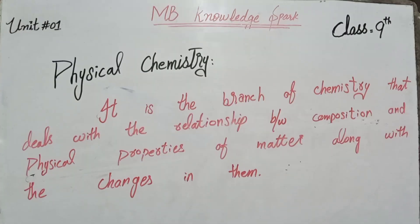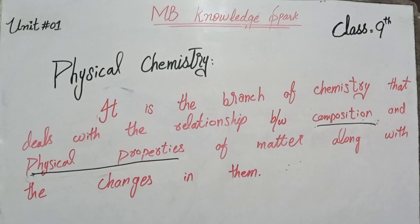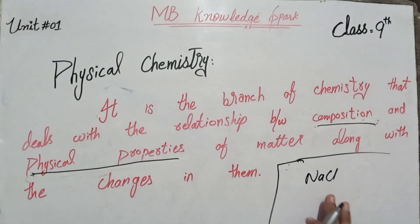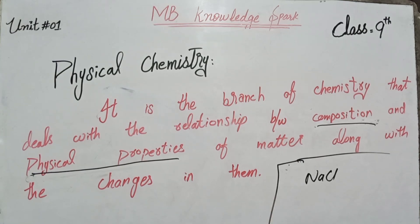Physical chemistry is the main branch of chemistry in which we discuss the composition and physical properties of matter. For example, we take NaCl — table salt. If we check its physical appearance, it is crystalline in shape and white in color. These are its physical properties. Its composition is sodium and chlorine.